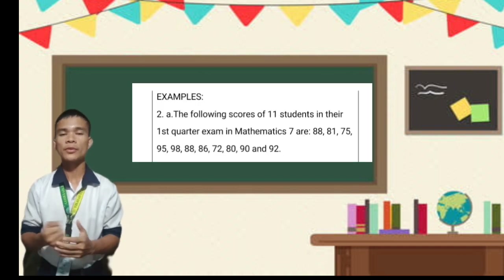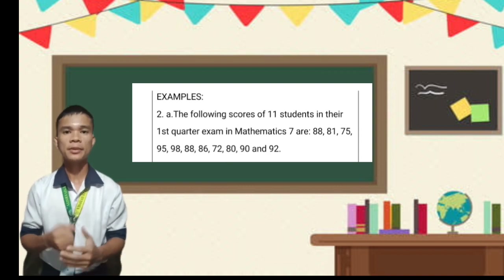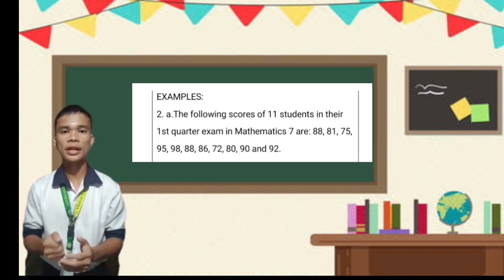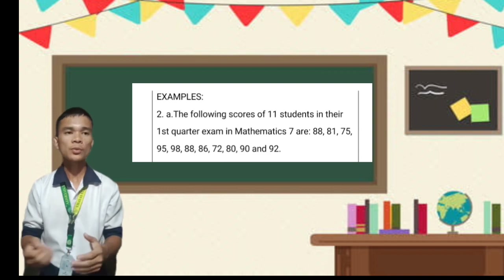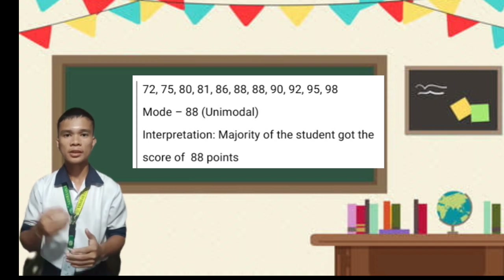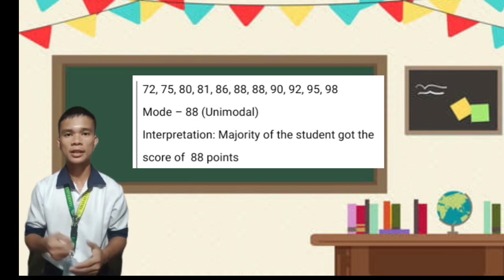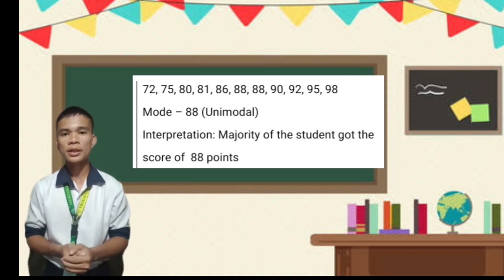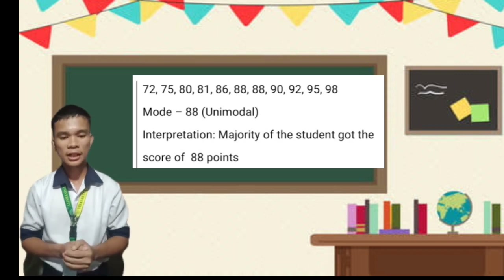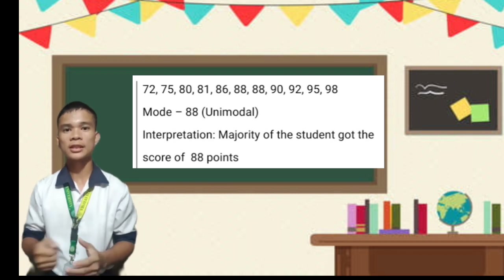Let's find the mode of: 88, 81, 75, 95, 98, 88, 86, 72, 80, 90, and 92. Arranging in ascending order: 72, 75, 80, 81, 86, 88, 88, 90, 92, 95, and 98. The number that occurs most frequently is 88. And what type of mode is it? It is unimodal.